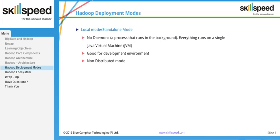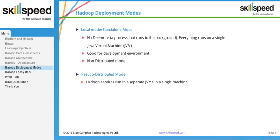The second mode is pseudo-distributed mode, which is most heavily used by developers and will be used throughout this course. In pseudo-distributed mode, you install Hadoop on a single machine and simulate an entire Hadoop cluster on it. This is ideal for testing sample programs — you can test your code with sample data on a single machine, and if it works, deploy it to a real production cluster.